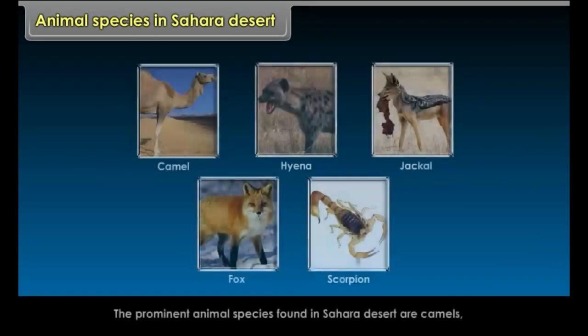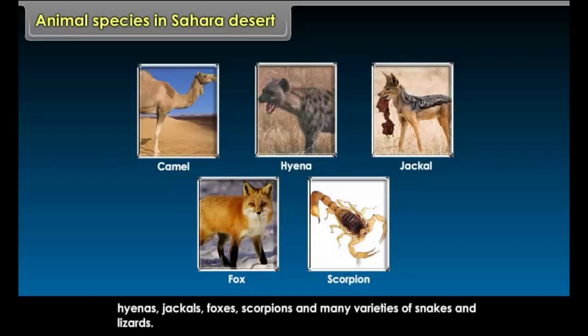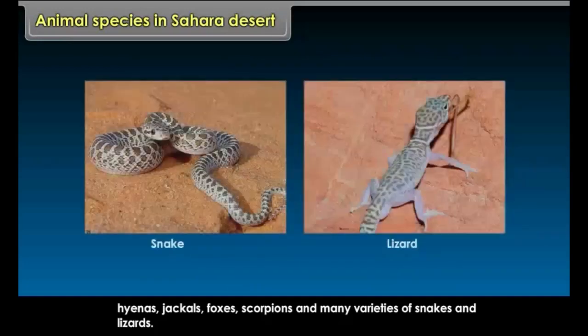The prominent animal species found in the Sahara Desert are camels, hyenas, jackals, foxes, scorpions, and many varieties of snakes and lizards.